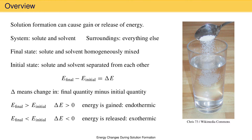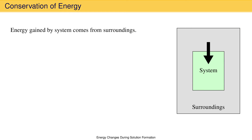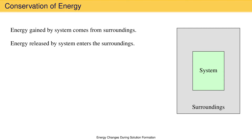This is a good start, but we need to think about these energy changes in more detail. If the system gains energy in an endothermic solution process, where does the gained energy come from? It must come from the surroundings. On the other hand, if a system releases energy in an exothermic solution process, that energy must go into the surroundings. We know this because energy can neither be created nor destroyed — energy gained by the system was lost by the surroundings and transferred to the system.